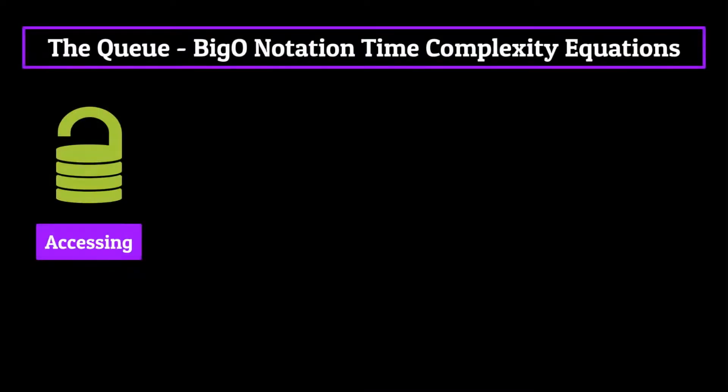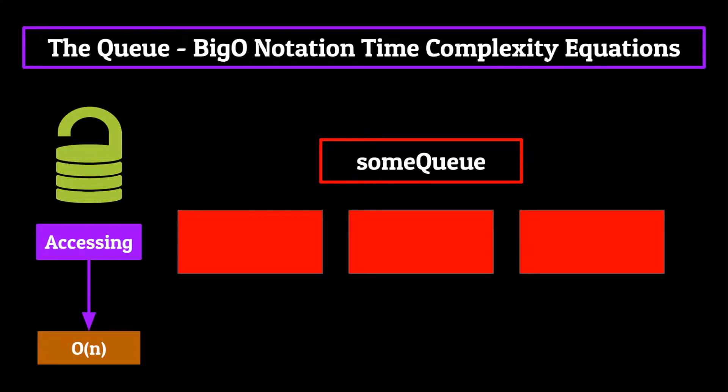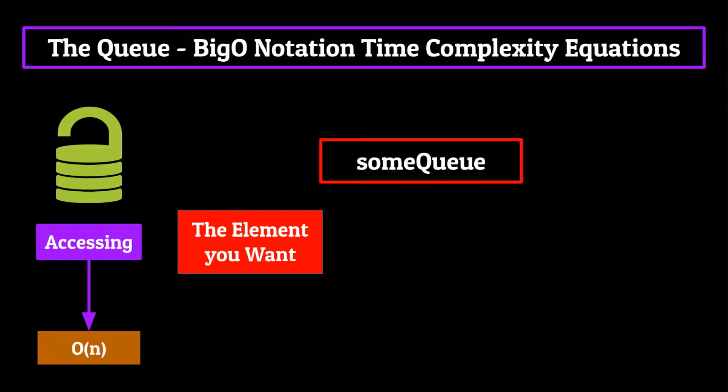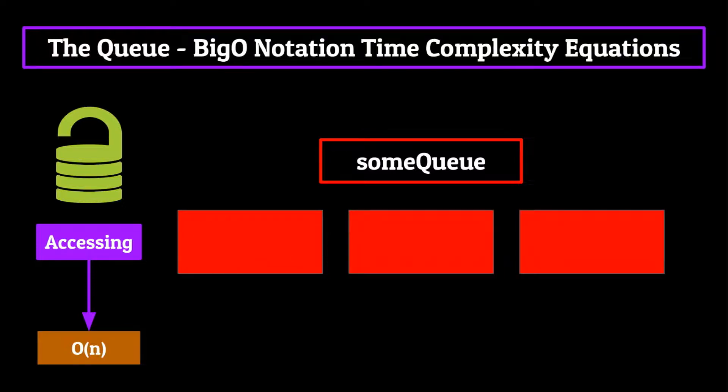Now accessing an element within a queue is going to be O(n). This is because, let's say, you had some queue full of three elements. If you want the object at the tail, you first have to dequeue every element off the front, until the one you want is at the head of the queue. Then and only then can you actually get the value contained within that. Since this may require you to go through the entire queue, accessing is O(n). This is because, again, queues are sequential access data structures and not random access data structures. This means we can't simply just grab an element from the middle of the queue, that's just not how things work.